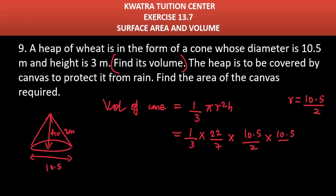r² and multiply it with height which is 3. Cancel 3 to 3, cancel 2 to 2, cancel 11 to 10.5, cancel 7 to 10.5, you will get 1.5 here. Then you have 11, 1.5, and 10.5 divided by 2. You will solve this and you will get the final answer 86.625 m³.